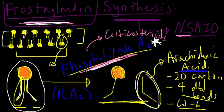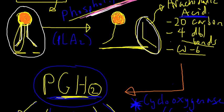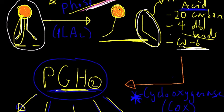This arachidonic acid is now in the cytoplasm, a 20-carbon molecule with four double bonds. It's an omega-6 fatty acid, so it's one of our essential fatty acids. And through an enzyme reaction, which I'm going to double star because it's absolutely essential for NSAID action...